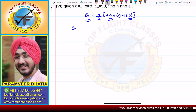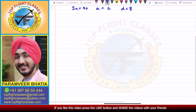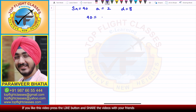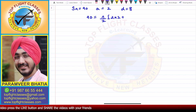Sn is equal to 90, A is equal to 2, and D is equal to 8. So, 90 = N/2 times (2 into 2 plus (N minus 1) times 8).